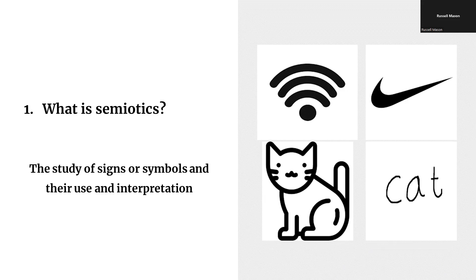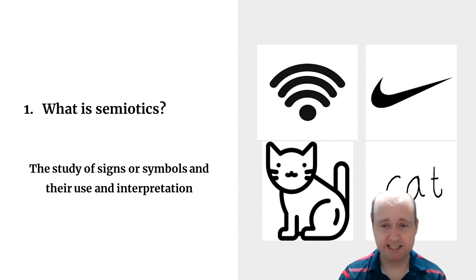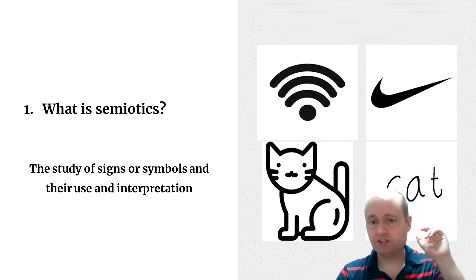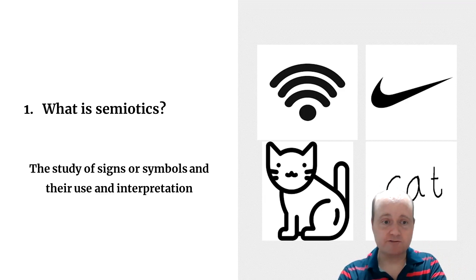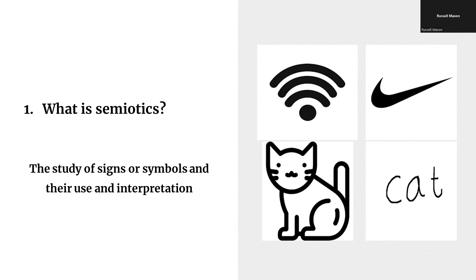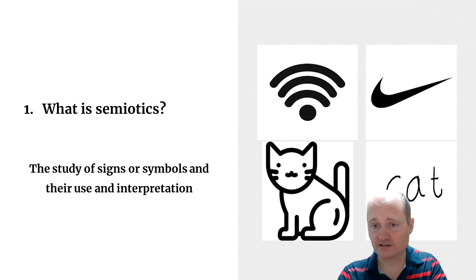Semiotics is the study of signs or symbols and their use and interpretation. In semiotics they use the word 'sign' — looking at the images behind me, we have the sign for wi-fi, the sign for Nike, the sign for a cat as a picture, and the same idea represented in letters — the word 'cat' in English. All of these are signs that communicate a meaning of some kind.